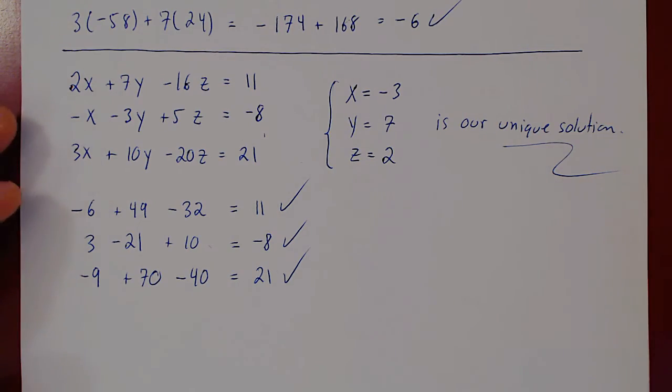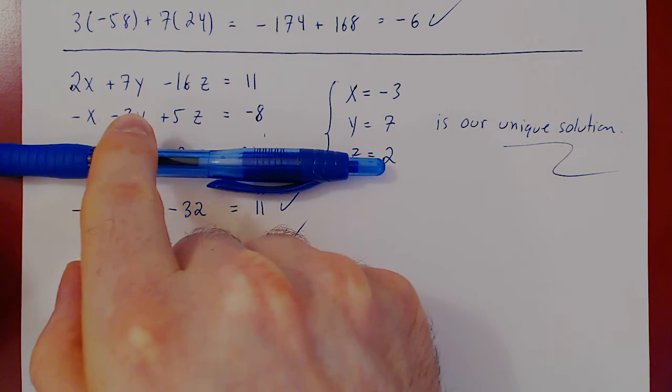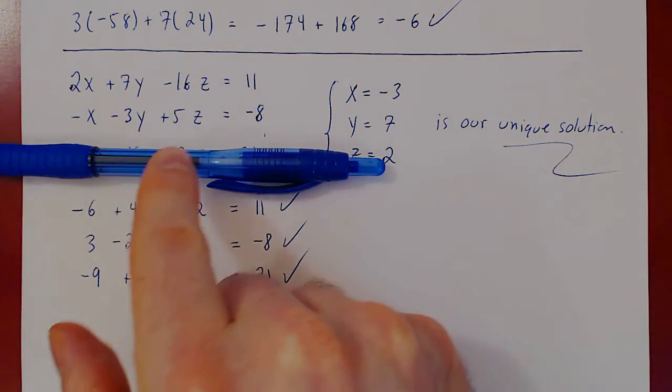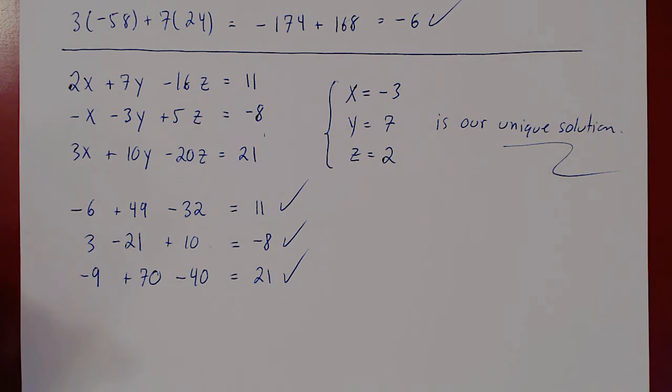You could ask, well, what happens if we say drop the third equation? And now we only have two equations and three variables. And what you would find in this case would be an infinite number of solutions. z would be a free variable. It would be a parameter. And then x and y would be functions of the parameter that we choose for z.